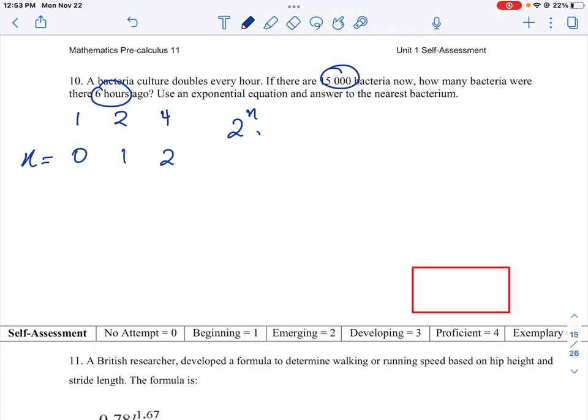And what it says here is if there are 15,000 bacteria, so our equation is going to be 2 to the n is equal to 15,000. And then it said how many bacteria were there six hours ago. So if n is our time value, we could say 2 to the n minus 6 is going to be equal to the number of bacteria that was six hours ago. We'll just give this another letter, the letter A.